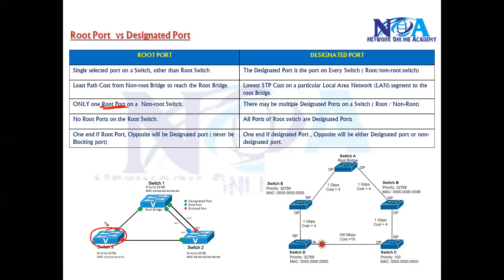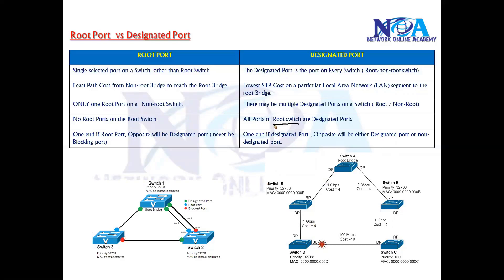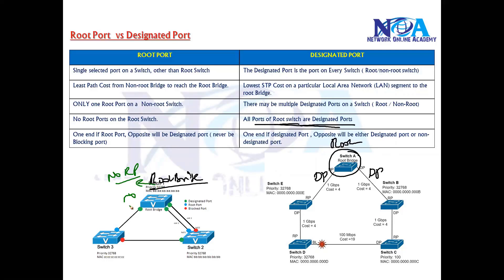Every non-root bridge will have only one root port — you cannot have more than one. Whereas for designated ports, you can have multiple designated ports. You can have them on the root bridge as well as on the non-root bridge, so you can have two or three designated ports on a single switch. All the ports of the root bridge will be designated — if this switch is the root bridge, you will not have root ports, only designated ports.